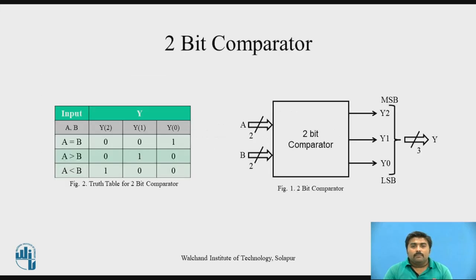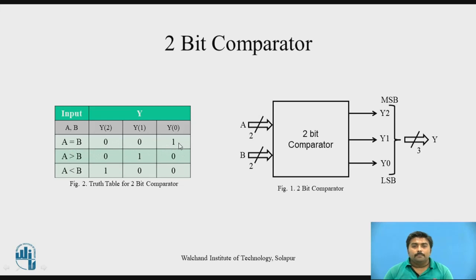Now let's start with the 2-bit comparator. Figure 1 shows the 2-bit comparator which has 2 inputs, each one is of 2-bit. The comparator, depending on the comparison — whether it is equal, whether it is greater than, whether it is less than — has a 3-bit output. This truth table shows that according to which input, what will be the output. If A equals B, Y(0) is 1. If A greater than B, Y(1) is 1. And if A less than B, Y(2) is 1.